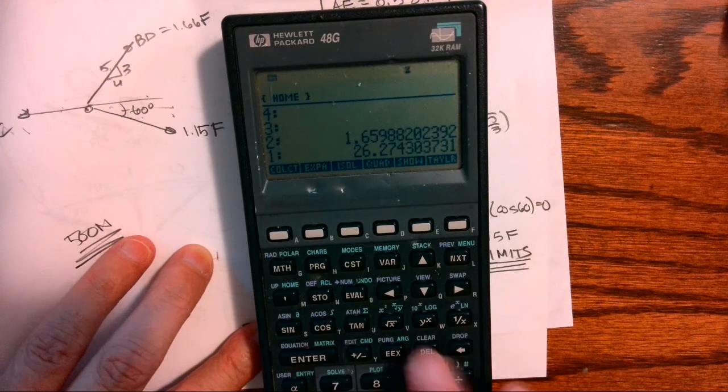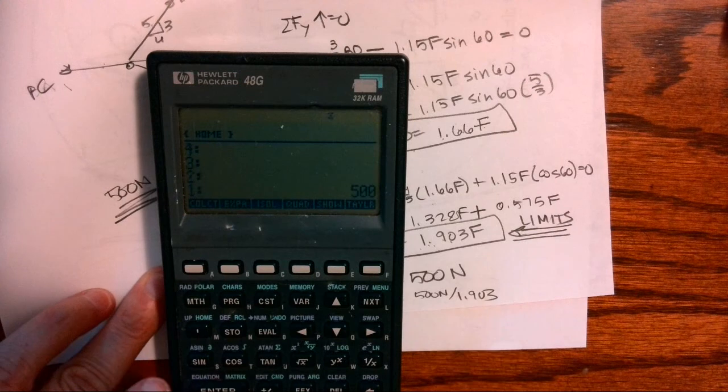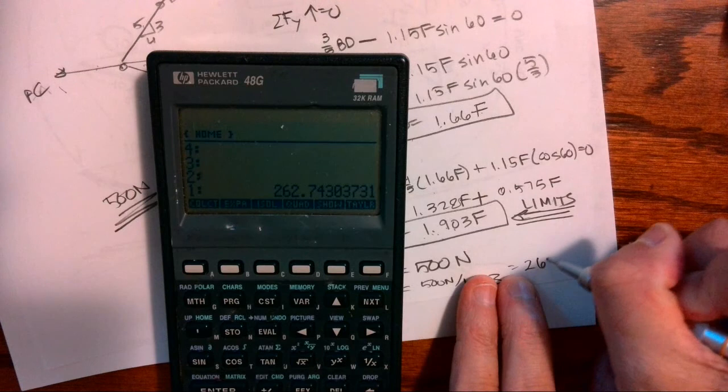That is not right, so we're going to take 500 divided by 1.903, and I get 262.7 Newtons.